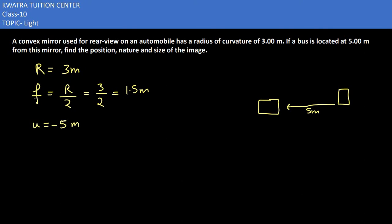The object distance u equals negative 5 meters, and we know that u is always negative. Which mirror is given here? We have a convex mirror, so the focal length is positive.